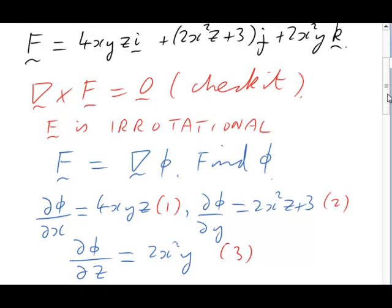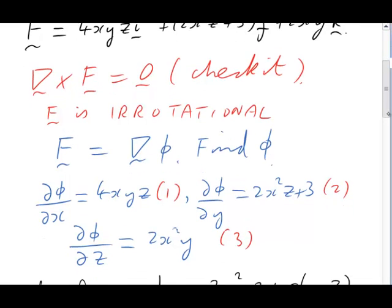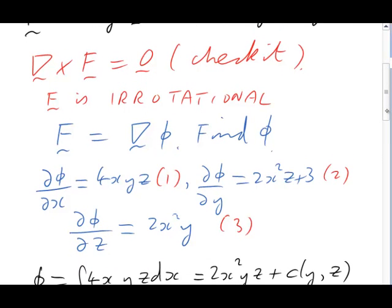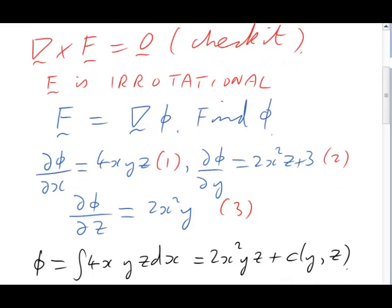Starting with number one, I'm going to integrate it with respect to x. On the left-hand side I get phi. On the right I have an integral, the integral of 4xyz dx. y and z are constant as far as x is concerned, and 4x integrates to 2x squared. So we get 2x squared yz plus an integration constant. But that integration constant is only constant as far as x is concerned. So it's really c of y and z.